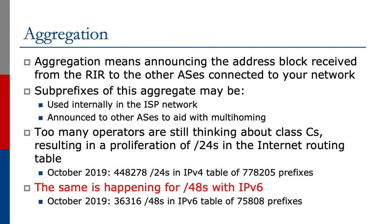However, it seems that too many operators are still thinking about classful routing — Class A, Class B, Class C addresses were obsolete in 1994, and what we're seeing is a proliferation of slash 24s in the Internet routing table.